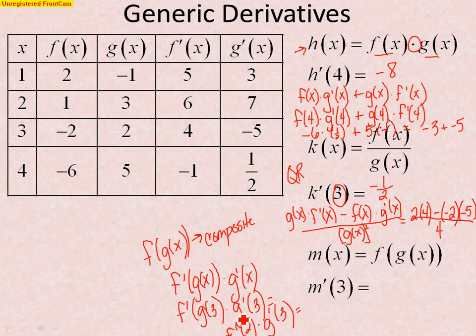Working at the bottom of the page here, f prime of 2, here's my f prime of 2, it's 6. g prime of 3 is negative 5. 6 times negative 5 is negative 30. And that's how we do a chain rule generic.